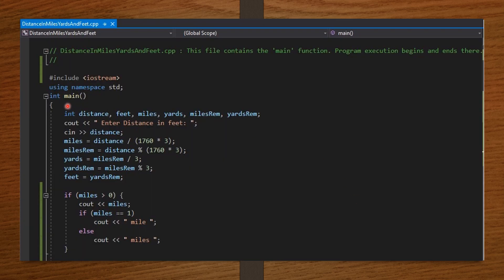In my int main function, I declared distance, feet, miles, yards, milesRem, and yardsRem as integers. cout, enter distance in feet, in quotation marks as a string. So, the computer should display to the user, enter distance in feet. cin distance. The user should enter, via the keyboard, the integer value of distance.